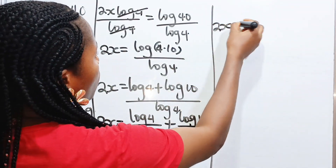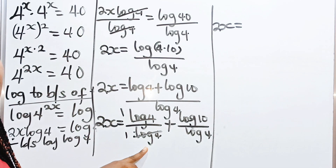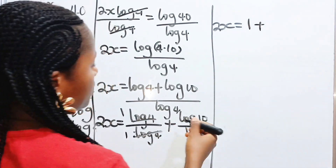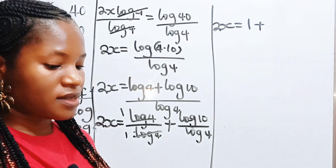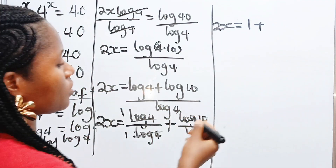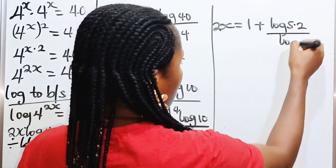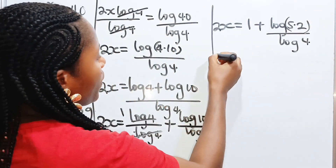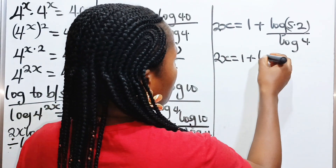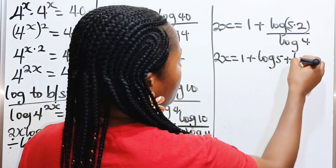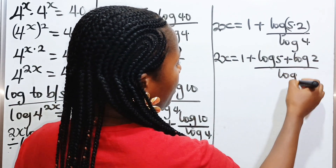Distributing the denominator, we have 2x is equal to log 4 over log 4 plus log 10 over log 4. Log 4 divided by itself gives 1. Now log 10 can be expressed as log(5 × 2), so we have 2x is equal to 1 plus log 5 plus log 2, all divided by log 4.